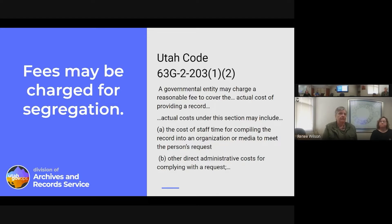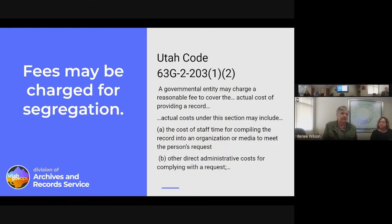If you have to spend time segregating or redacting, you can charge for that. Section 203 talks about fees. It begins with a simple statement that a governmental entity may charge a reasonable fee to cover the actual cost for providing a record. Further down it lists what actual costs can include: the cost of staff time for compiling the record, and other direct and administrative costs for complying with the request.